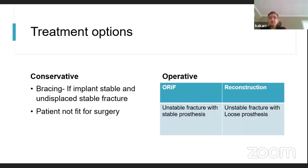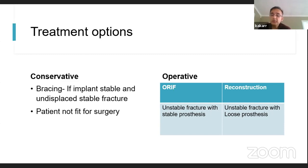Treatment options for tibial periprosthetic fractures can be conservative or operative. Conservative treatment includes bracing or plaster application, provided the fracture and implant are both stable, or if the patient is not fit for surgery. On the surgical side, it could be open reduction and internal fixation, or reconstruction when the fracture is unstable with a loose prosthesis. With a stable prosthesis, fixation alone can be performed.